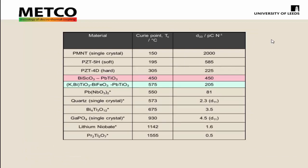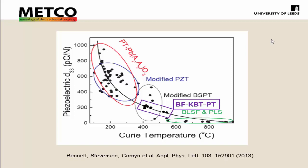Putting these in a table combining all those materials, the region we wanted to achieve was D33s above 100 pC/N with Curie points above 500 degrees — that was our starting point. We're going to focus mainly on the KBT-BFBT material because it's a Leeds material — a project of one of our PhD students, Jim, who's in the audience. It's a Leeds proprietary material which has gone forward. Plotting piezoelectric D33 versus Curie temperature shows the region of activity and temperature range we were targeting — and that's how we got to where we were.